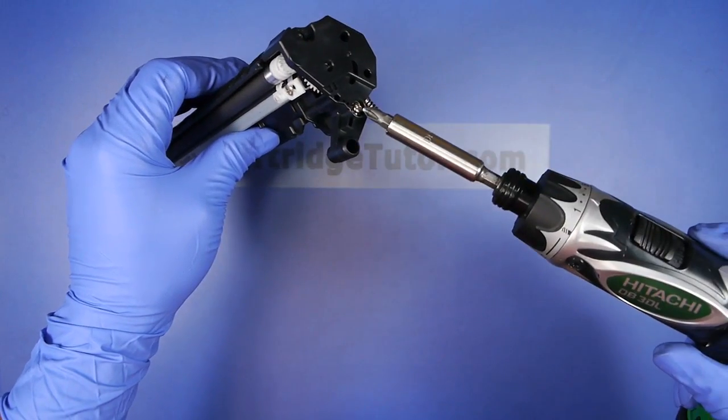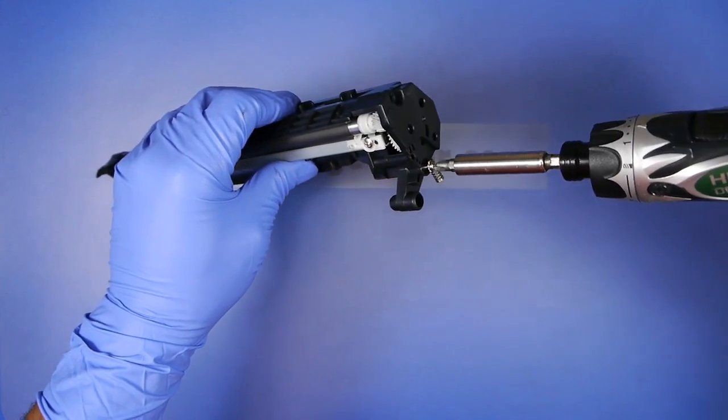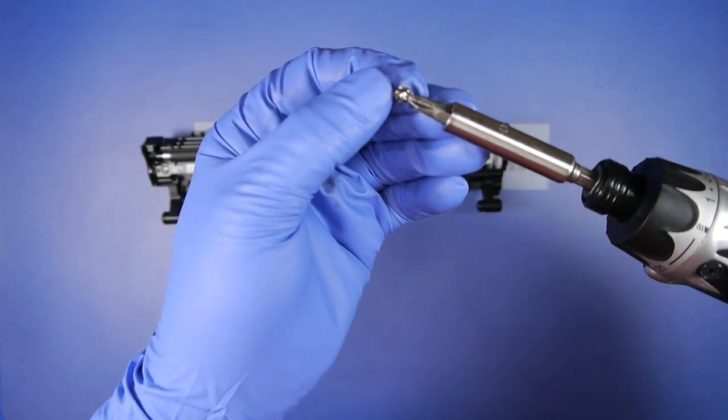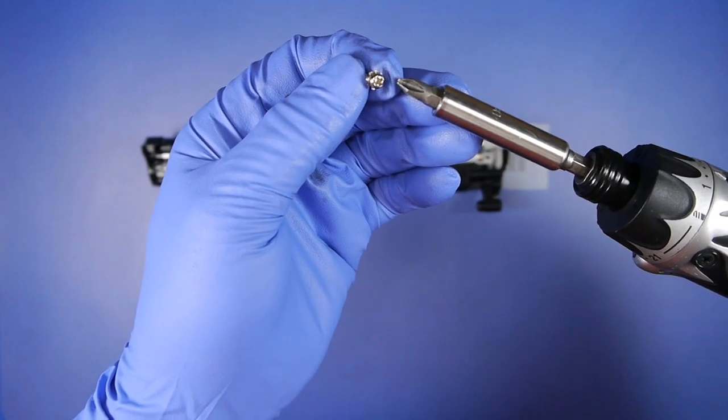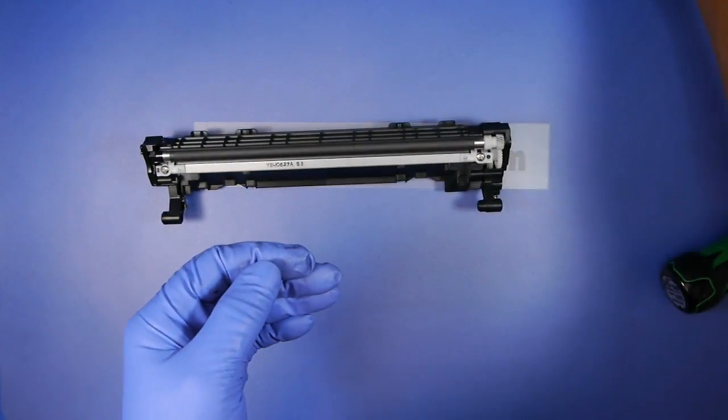You'll notice that sometimes the screws on the outside of the cartridge have these little teeth around them. You want to use those screws on the outside in the proper places again.